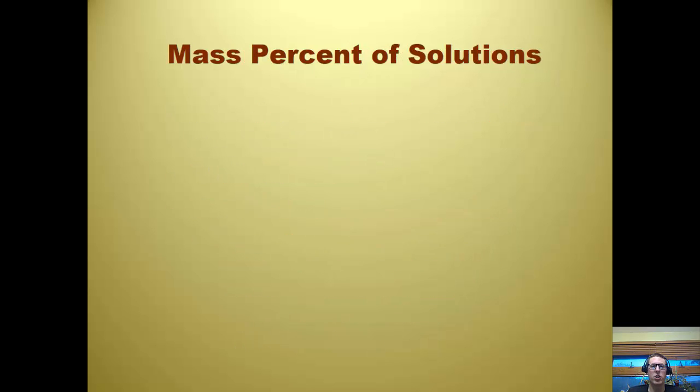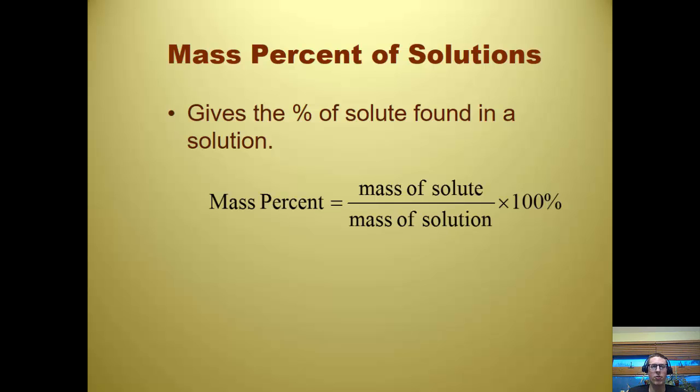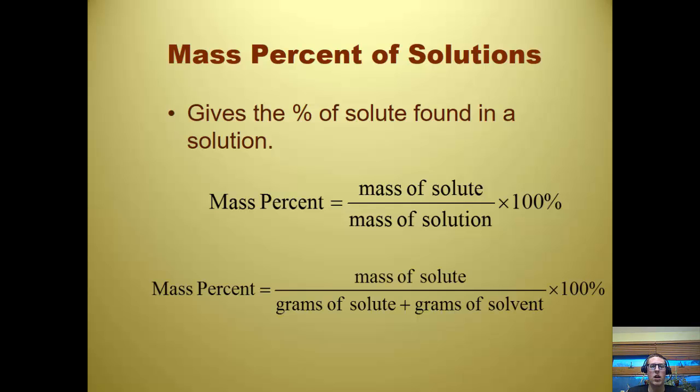Let's talk about the mass percentage of solutions. That gives the percent of the solution found in a solution. Mass percent is just mass over mass, mass of a solute over mass of solution. It should have grams over grams, usually, and then times 100. The mass of solution is going to have the solute and the solvent in there, so it could be grams of solute plus grams of solvent.